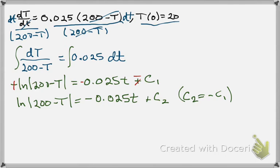Now, we need to get rid of the natural log, so we're going to make both sides exponents of E. On the left-hand side, that works out really nice, as we get 200 minus T. On the right-hand side, once again,